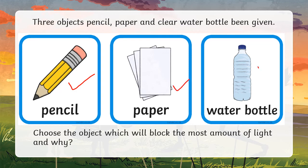Paper and clear water bottle: paper is translucent, clear water bottle is transparent. So translucent allow few lights to go through, so it will not block the most amount of light. Transparent water bottle: all the lights will pass through.